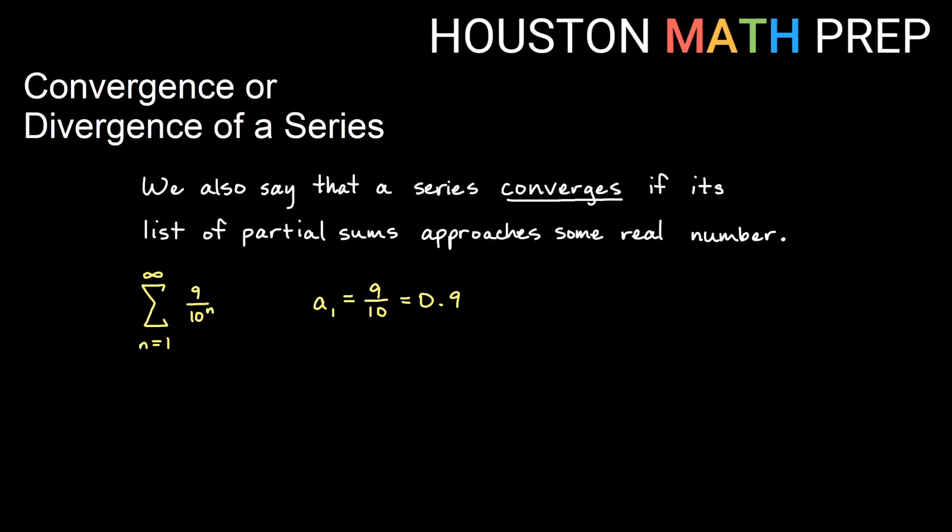We can also say that something converges if its list of partial sums gets really close to a number. So if I'm adding up an infinite number of terms that fit the pattern 9 over 10 to some power. So if I'm plugging in my first term would be 9 over 10 to the 1, which is 9 over 10, which is 0.9. If I plug in n equals 2, then my power of 10 is going to go up by 1. So my second term is actually going to give me 9 over 100. If I add that to what I already had, because we're summing here, I actually get the 0.9 plus the 0.09 giving me 0.99.